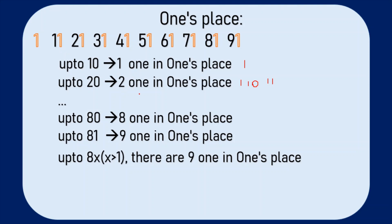Up to 80 there are 8 ones in the ones place, and at 81 we have 9 ones in the ones place. For 81x where x is greater than 1, it is still the same count of ones in the ones place. Hence we can conclude that in the ones place there is an increase of 1 for every 10 digits.